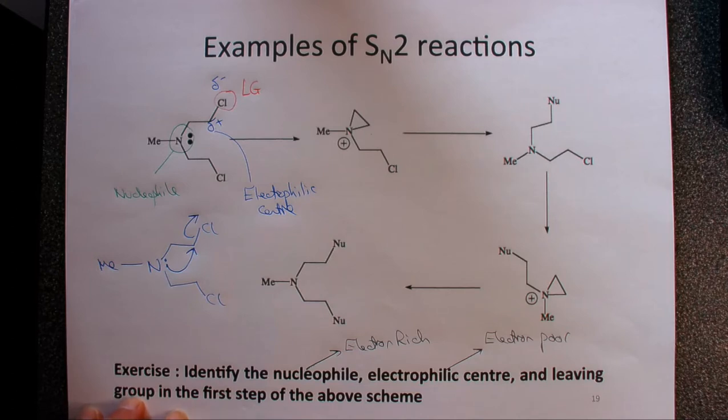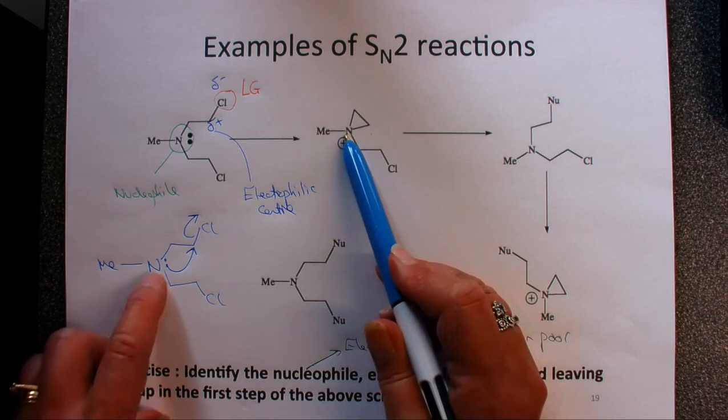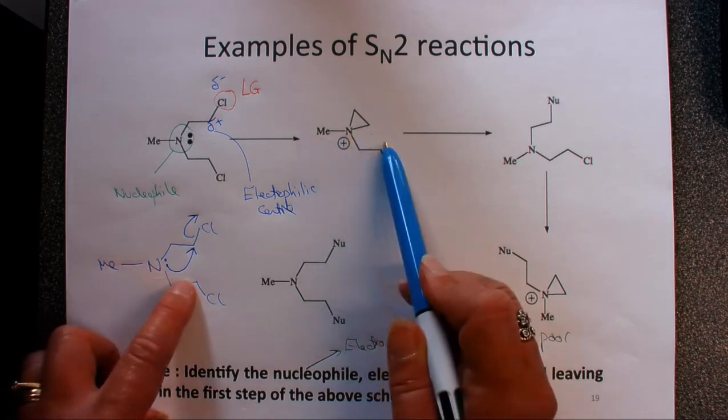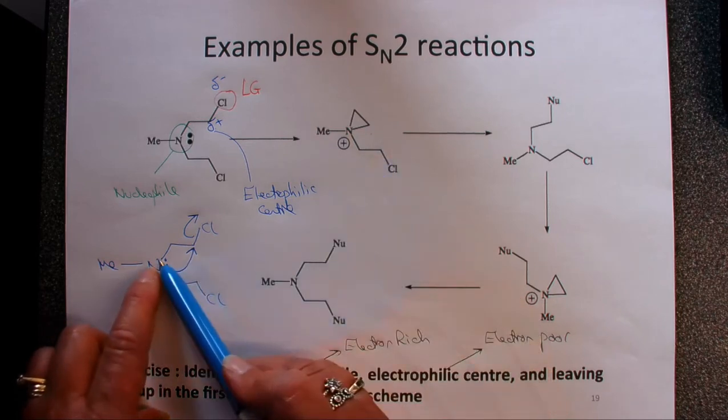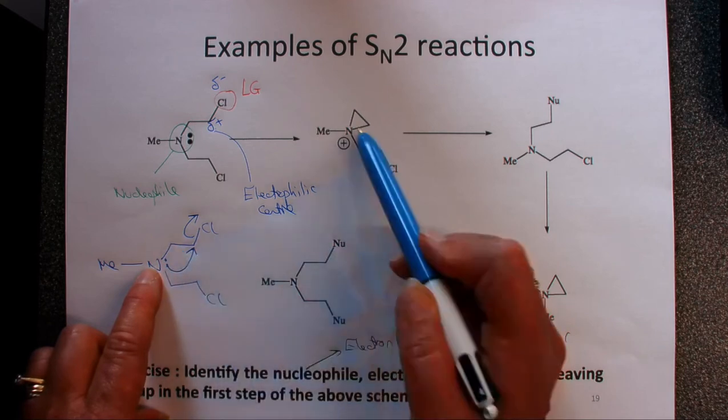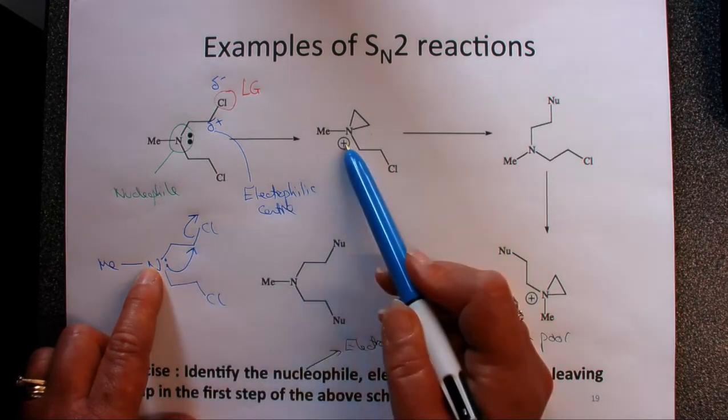This gives us this intermediate here. Notice we've got a nitrogen, we've got a methyl, we've got the bottom chain the same, but what we've now done is we've formed a bond between this nitrogen and here. That gives us a one, two, three membered ring. The nitrogen lost its lone pair of electrons so it's become positive.